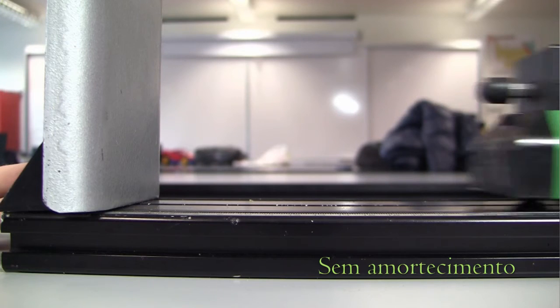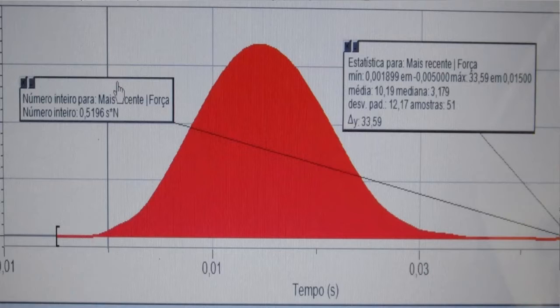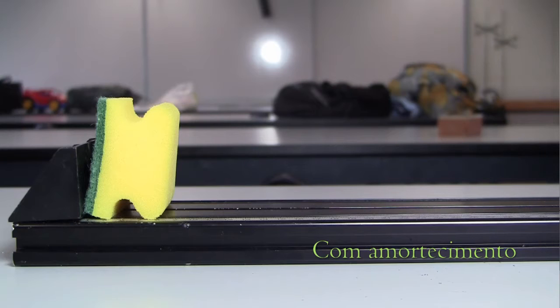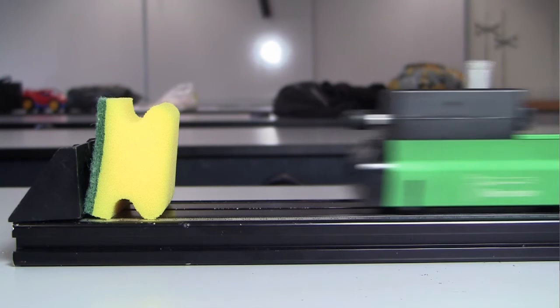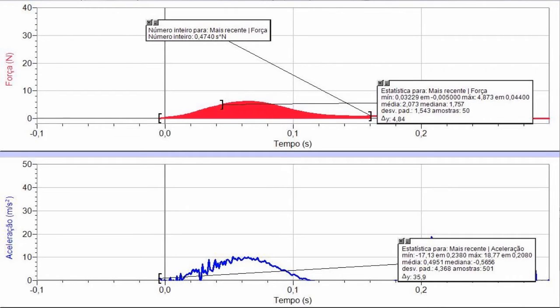Aqui, podemos observar o efeito de amortecimento, por exemplo, pela existência de zonas de deformação programada nos automóveis atuais. Para uma colisão à mesma velocidade, quanto maior for a duração da mesma, menores serão as forças e acelerações envolvidas, minimizando os riscos para os passageiros.